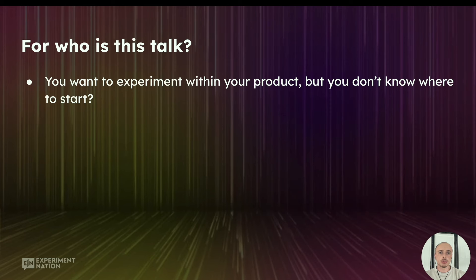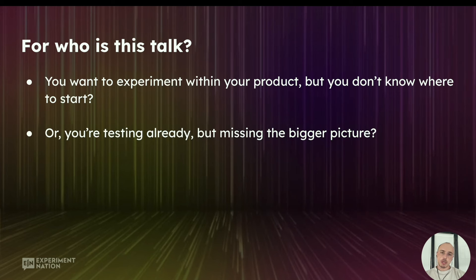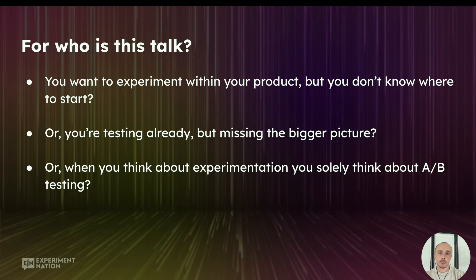They don't have a clear view of the direction that they're heading. Or maybe they're testing already, but they're still missing the bigger picture, the direction that they need to work towards, the overarching goal that they need to optimize towards. Or when you think about experimentation, you solely think about A/B testing. I want to show you that there are also other methods for experimentation to validate the ideas that you might have within your product.